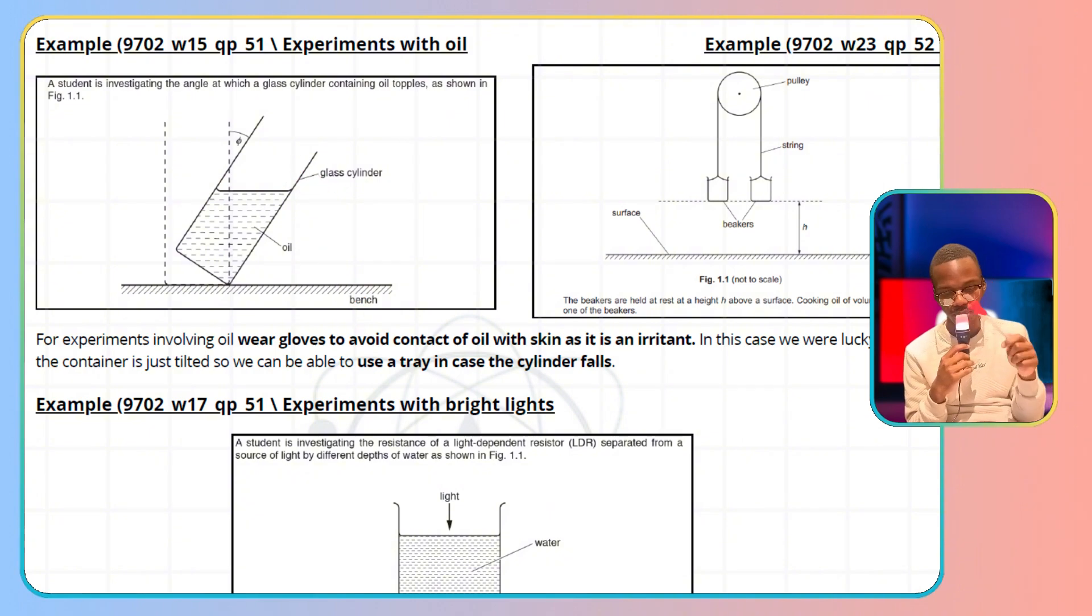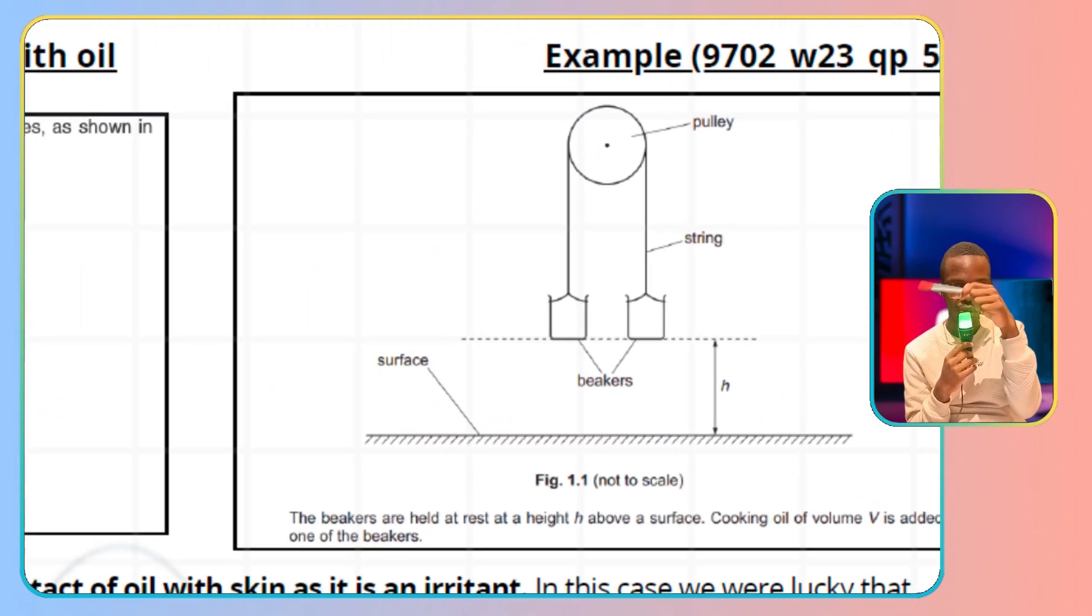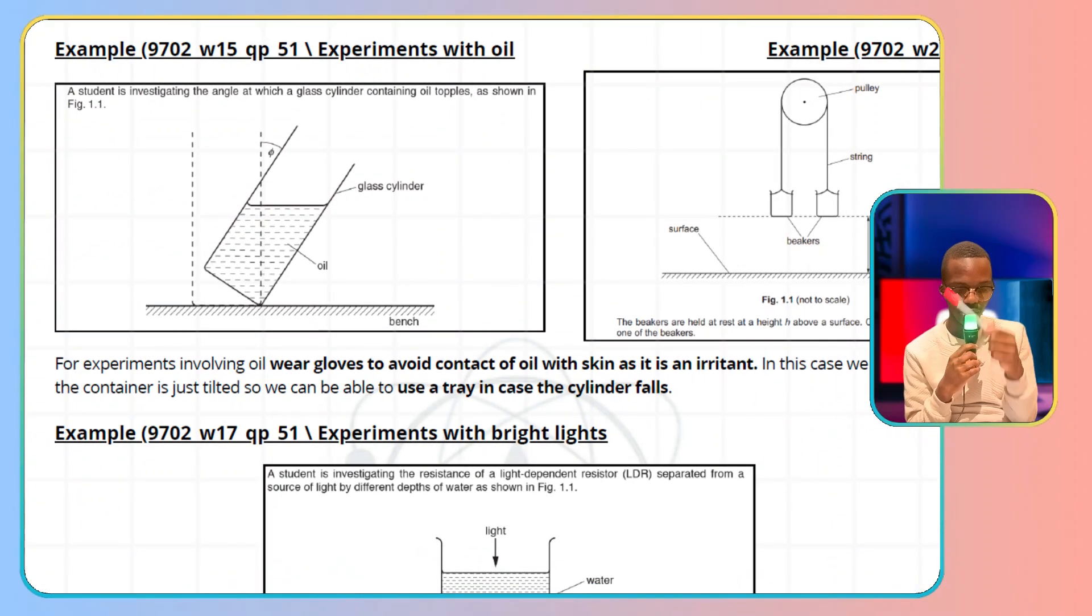the cylinder could fall, so we need a tray to catch the oil. In the other example, the beaker could fall or topple over, so use a tray to catch it. Be mindful of oil experiments. If you see it, think: I should use gloves to avoid contact with my skin, or if it's going to fall, use a tray to catch the oil.